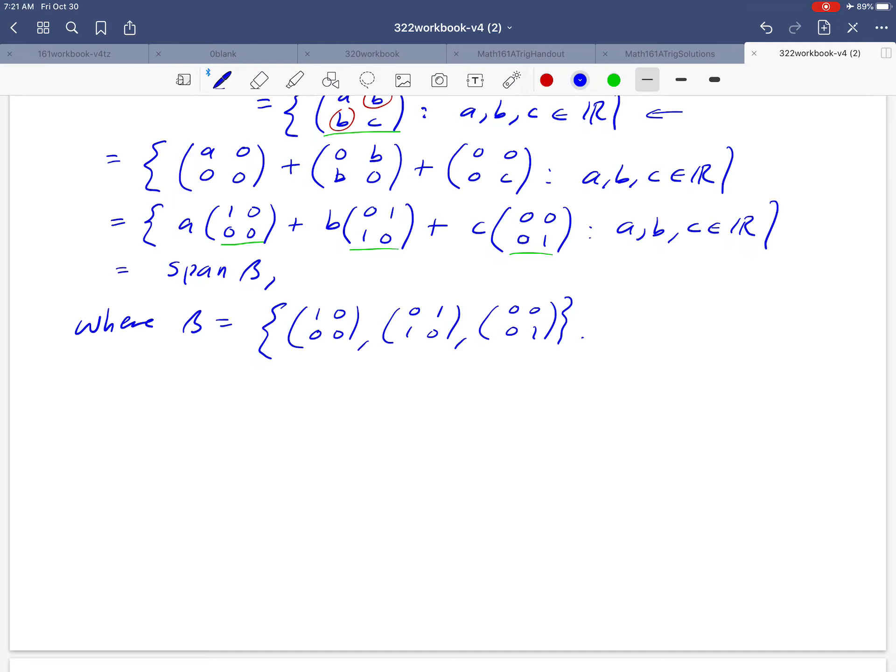Now the question is, is that beta a basis? So we know that beta spans our vector space, but we would also like to confirm that that's a linearly independent set. Now there's one other little difficulty that sort of comes into this problem that I don't know that we've run across before. If the vectors that we had in this set were tuples, we have a nice way of deciding whether tuples are linearly independent computationally. We would take those tuples, form a matrix, and figure out what the pivot columns are, but in this case, our vectors are not tuples, they're matrices. So we kind of have to go back to the definition of linear independence to answer this question here.